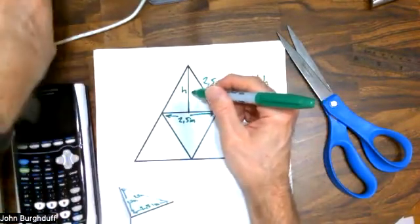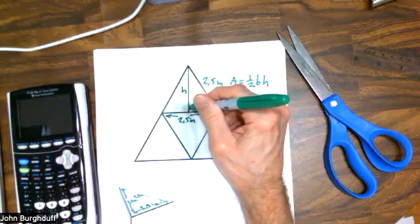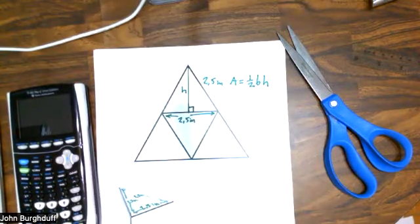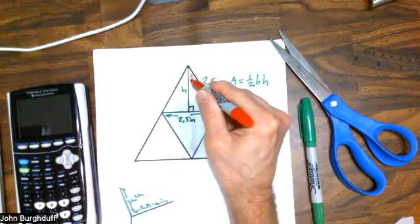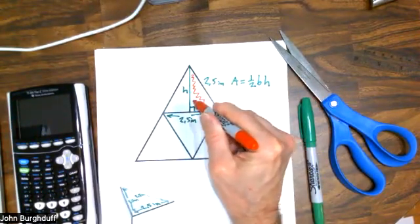Now, notice that when I draw H, I create a right triangle, which I'm going to just shade slightly in red so that you can kind of see what I'm talking about here, this triangle right in here.